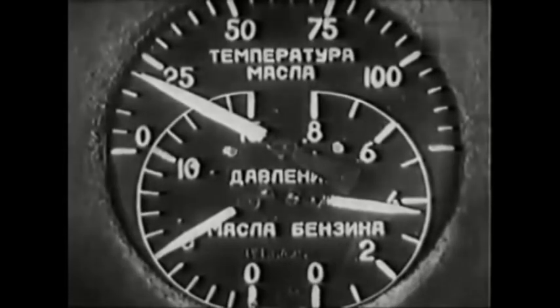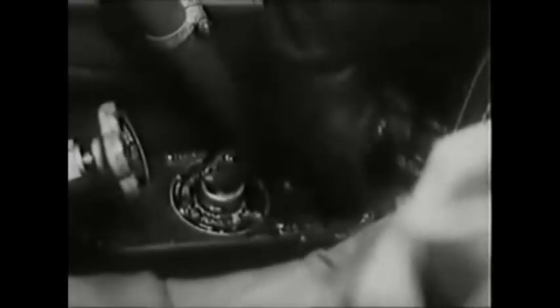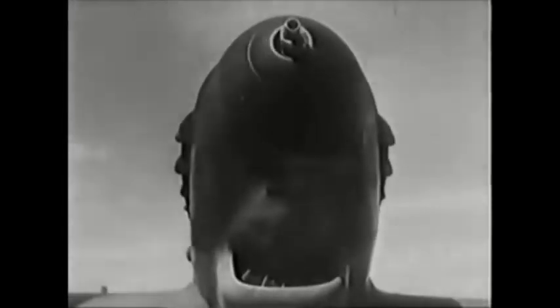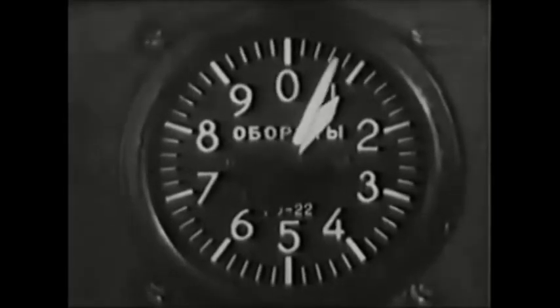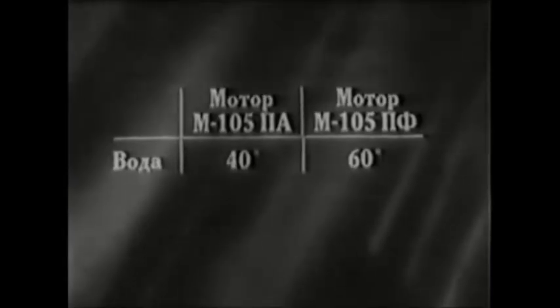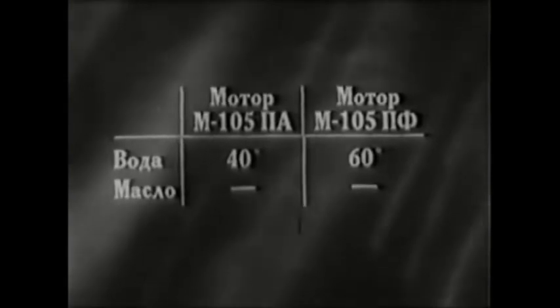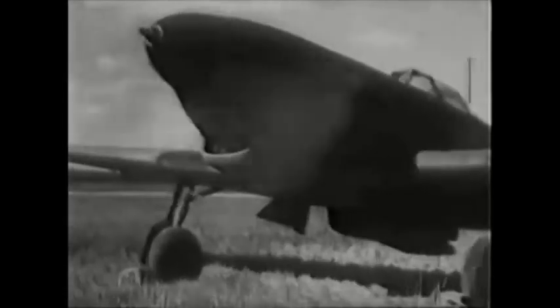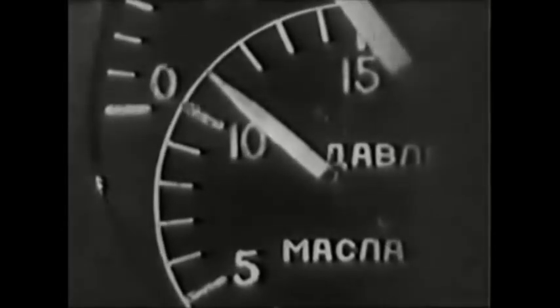Одновременно с появлением нормального давления масла открой инжектор дополнительной смазки мотора. Прогрев мотора производи на 800–1000 оборотов в минуту до достижения температуры воды 40–60 градусов и масла 40 градусов. В зимних условиях при разжиженном бензином масле прогрев производи на 900–1200 оборотов в минуту до температуры воды 40–60 градусов вне зависимости от температуры масла. Для ускорения прогрева постепенно увеличивай обороты, следя за тем, чтобы мотор работал без перебоев и давление масла не превышало 11 кг/см². По окончании прогрева закрой инжектор масла.